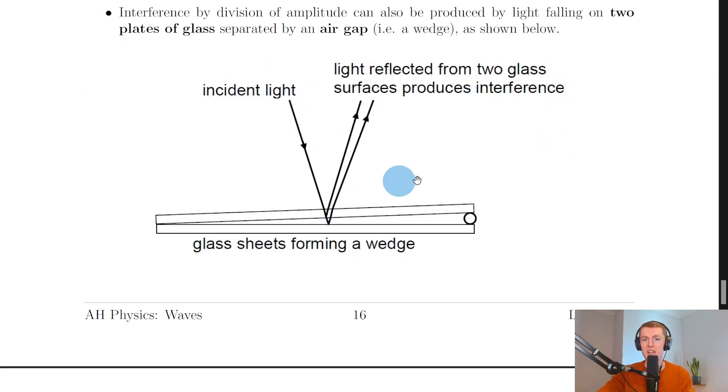In this picture we can see that light is reflecting in a similar way to what we saw for thin films and for blooming of lenses. You can see we've got these two glass sheets which could just be microscope slides where they're touching at one end and then they're separated at the other end by some object.